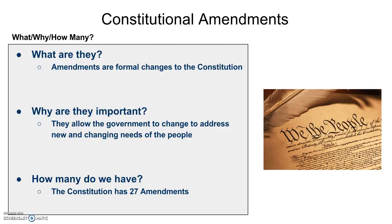This type of change does not happen very often. We only have 27 amendments total — 10 of those were the Bill of Rights, and the other 17 happened over the course of the years. So a formal amendment to our Constitution is slow and happens very rarely.